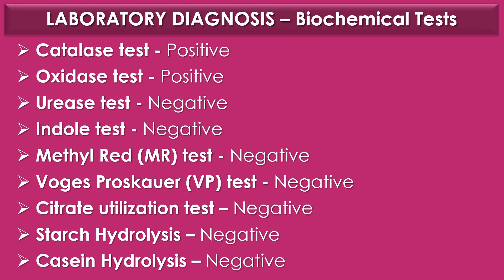Biochemical tests for Neisseria gonorrhoeae: Catalase test — positive. Oxidase test — positive. Urease test — negative. Indole test — negative. Methyl red test — negative. Voges-Proskauer test or VP test — negative. Citrate utilization test — negative. Starch hydrolysis — negative. Casein hydrolysis — negative.